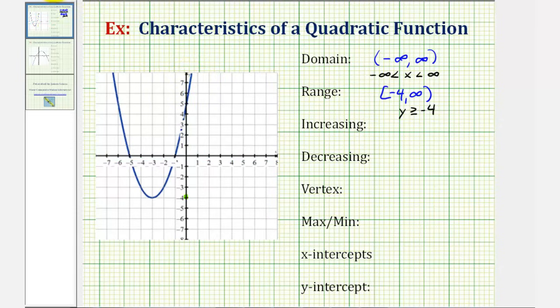Looking at the graph of our function, notice how on the left of the vertex to the vertex, the graph would be decreasing. When giving the interval for which the function is increasing or decreasing, we want to use x values. Notice how the x value of the vertex is negative three. So the function would be decreasing on the interval from negative infinity to negative three.